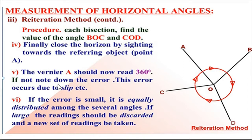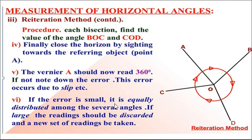This error may occur due to slip of the theodolite. If the error is small, it is equally distributed among the several angles. For example, if there is an error of 20 seconds, then those 20 seconds are equally adjusted among the four values — that is 20 divided by 4. If the error is large, the readings should be discarded and new sets of readings may be taken, starting with point A.